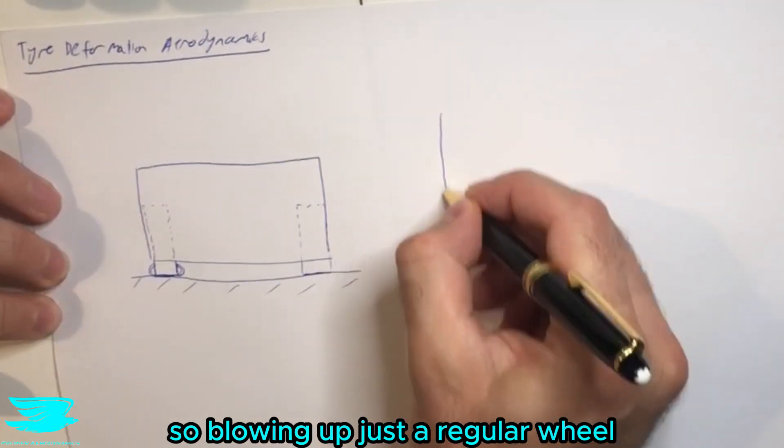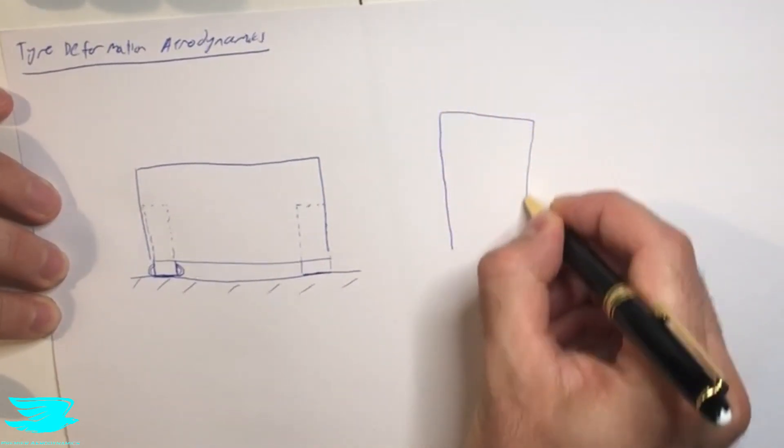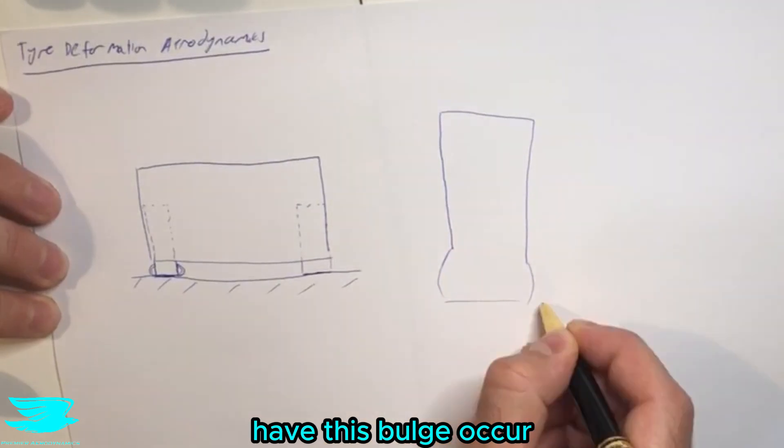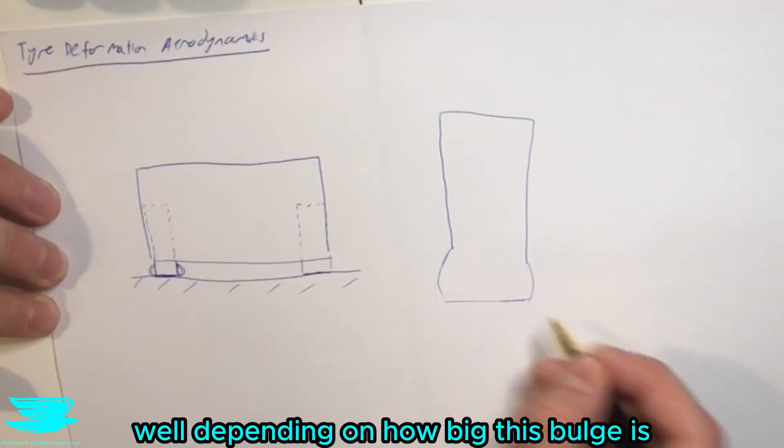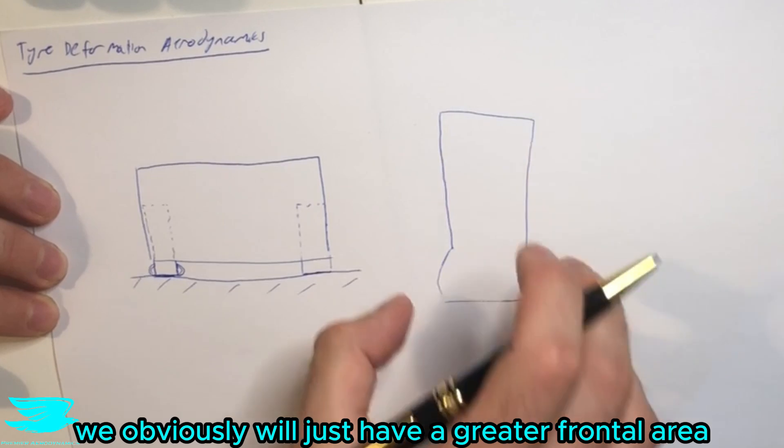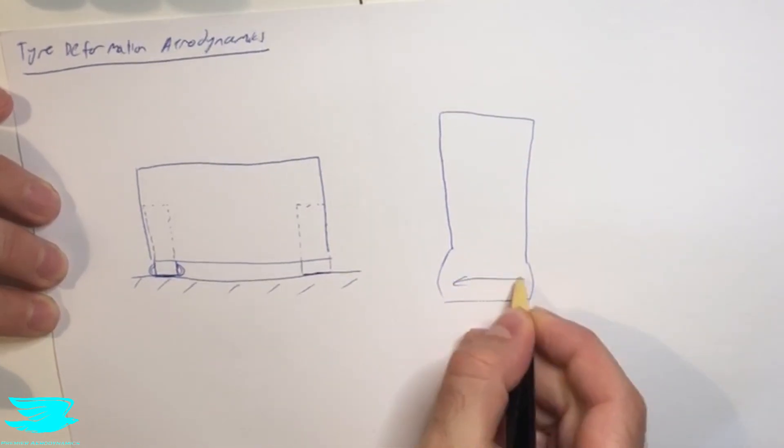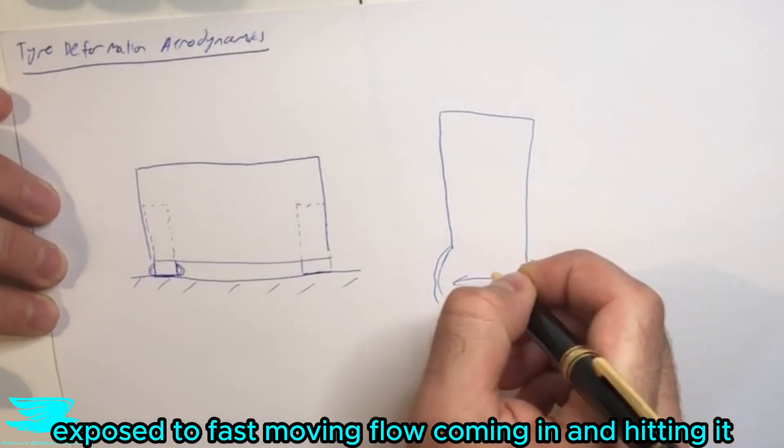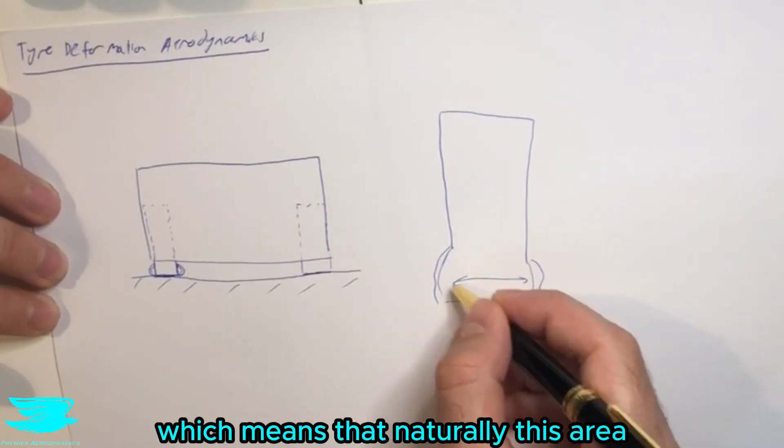Blowing up just a regular wheel, let's have a really big wheel here, and then around the contact patch we have this bulge occurring. Well, depending on how big this bulge is, we obviously will just have a greater frontal area if this is wider or narrower—a greater frontal area exposed to fast-moving flow coming in and hitting it.